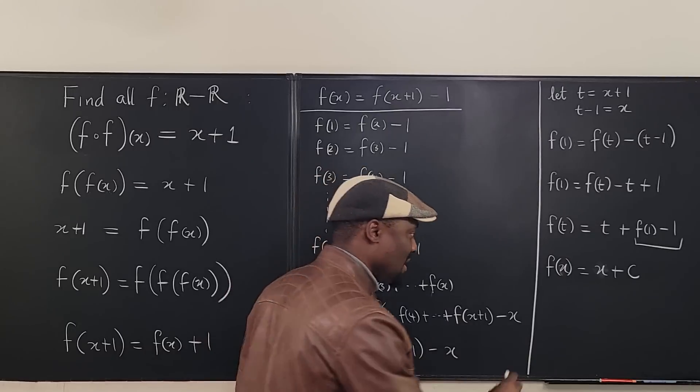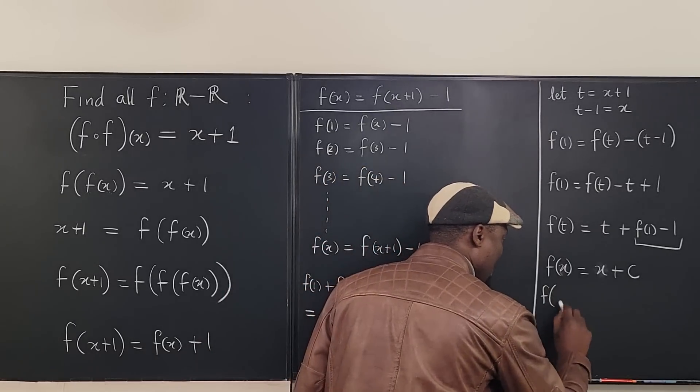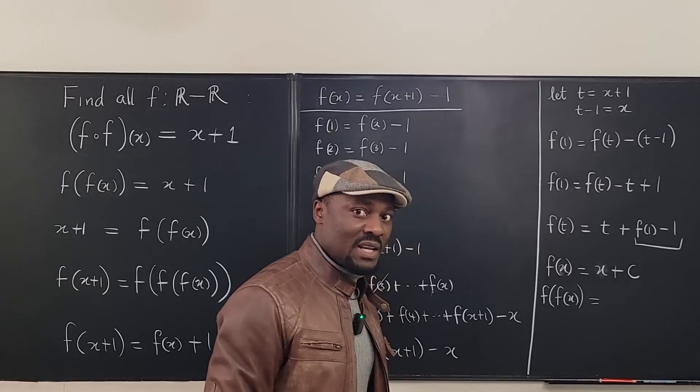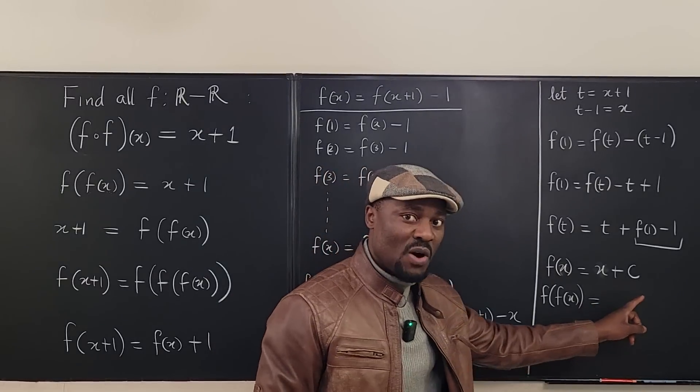So that's what we have. So let's compose this with itself. We have f of f of x is going to be, remember, is going to be x plus one.